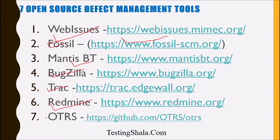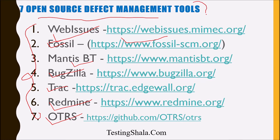The seventh is OTRS. So these are the seven important open source defect management tools which you can use completely free of cost. These are all open source and you have a good community of people who can also help you to support all the technical queries you might be having.